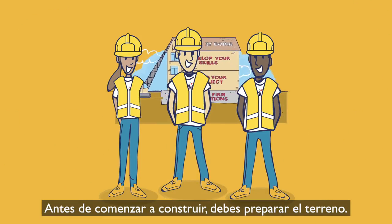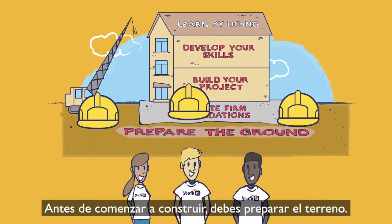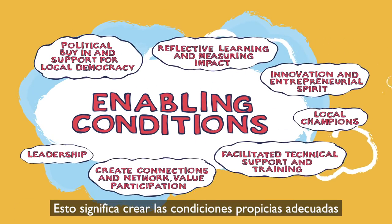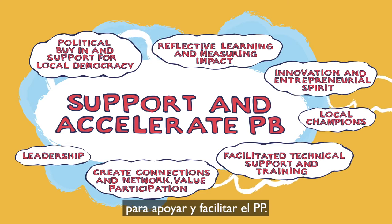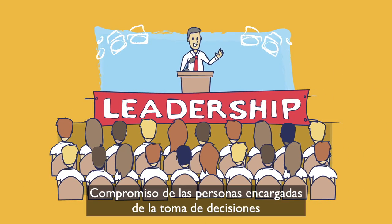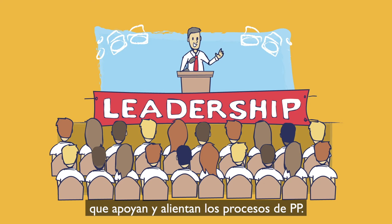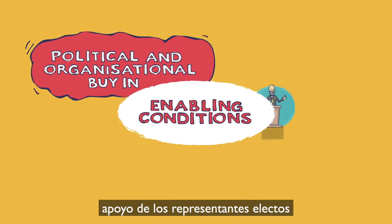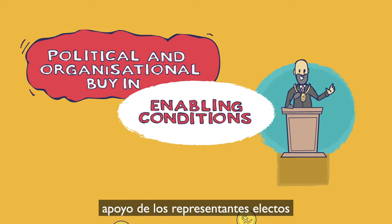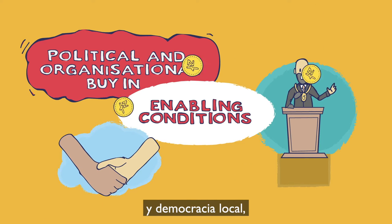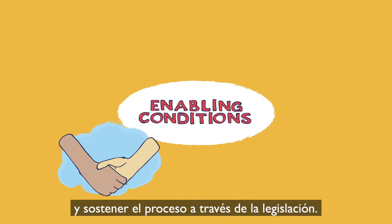Before you begin to build, you need to prepare the ground. This means creating the right enabling conditions to support and accelerate PB. For example, leadership and commitment from decision makers and budget holders who support and encourage PB processes. Political and organisational buy-in, support from elected representatives to build trust, nurture culture participation and local democracy, and sustain the process through legislation.